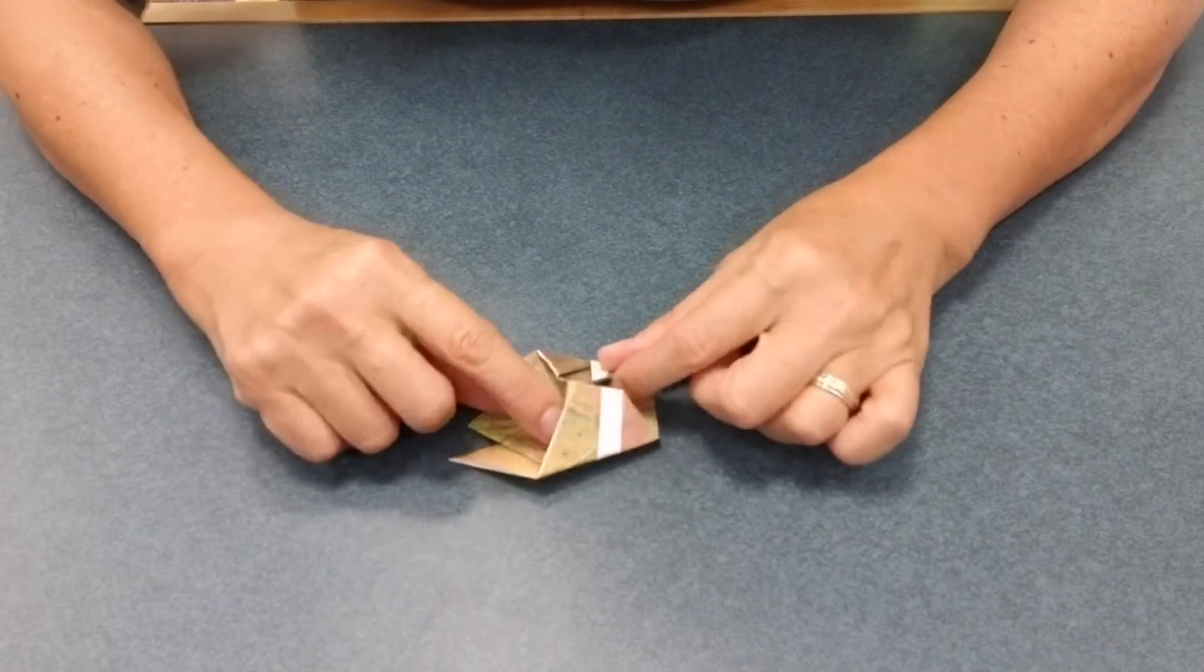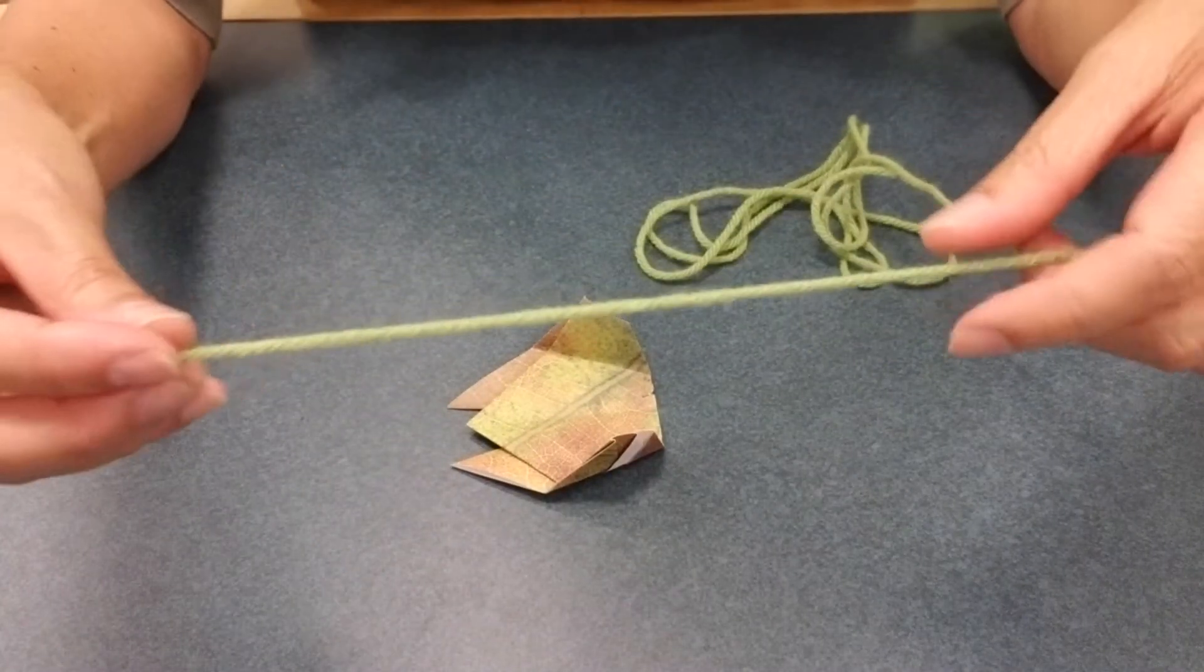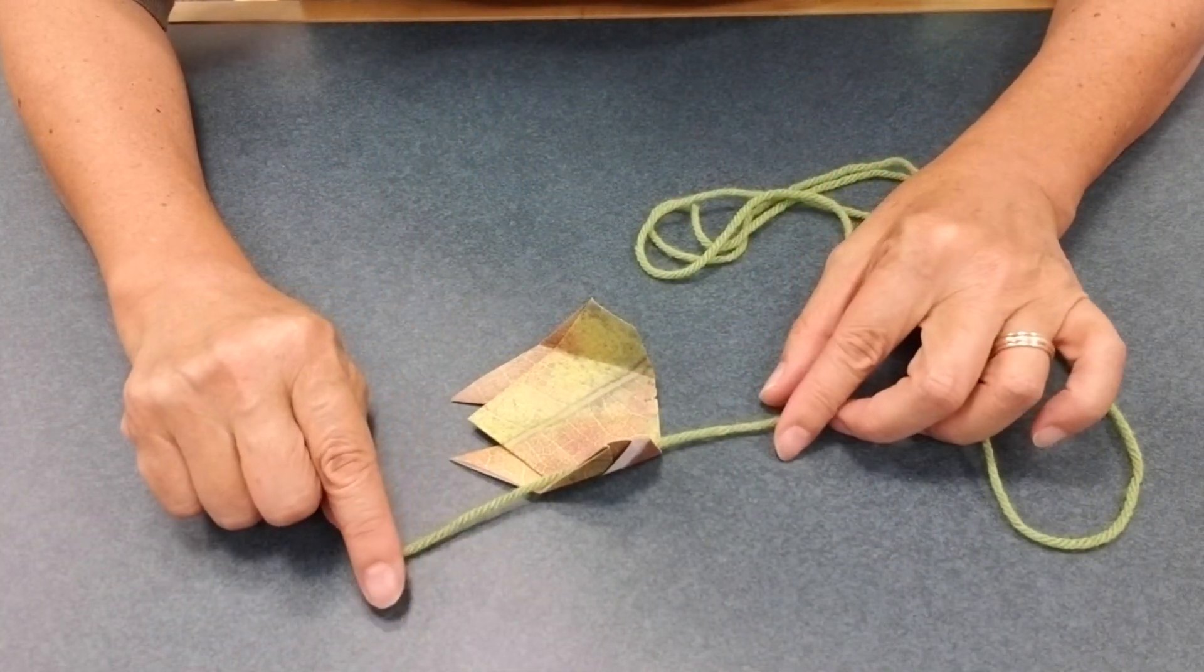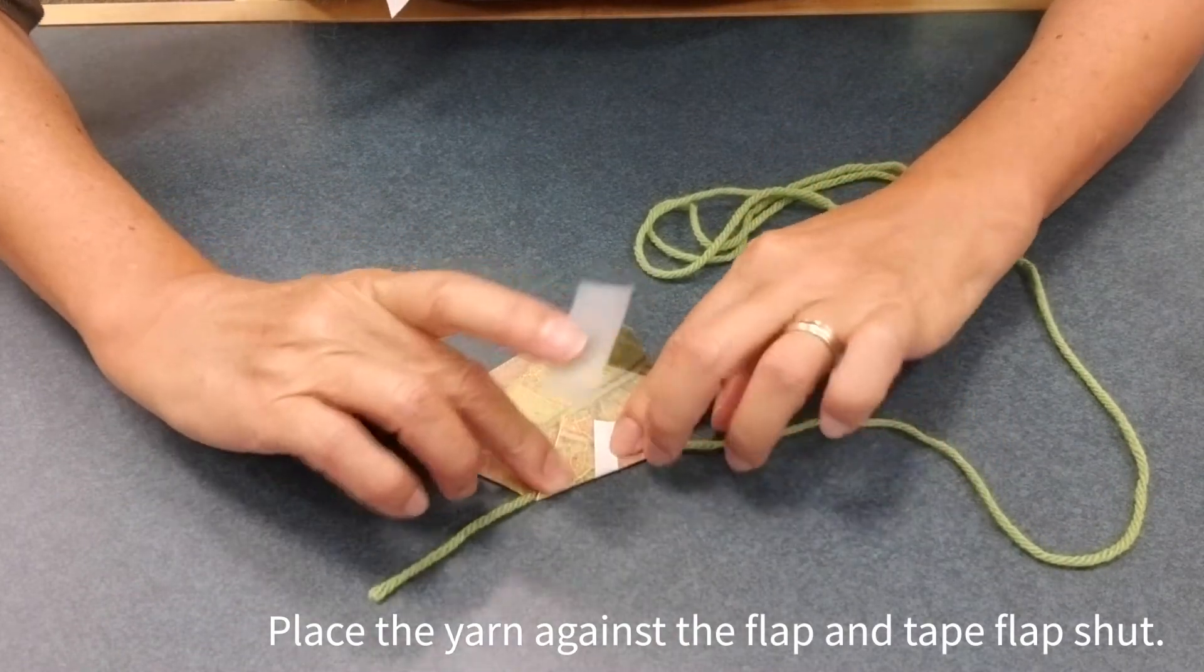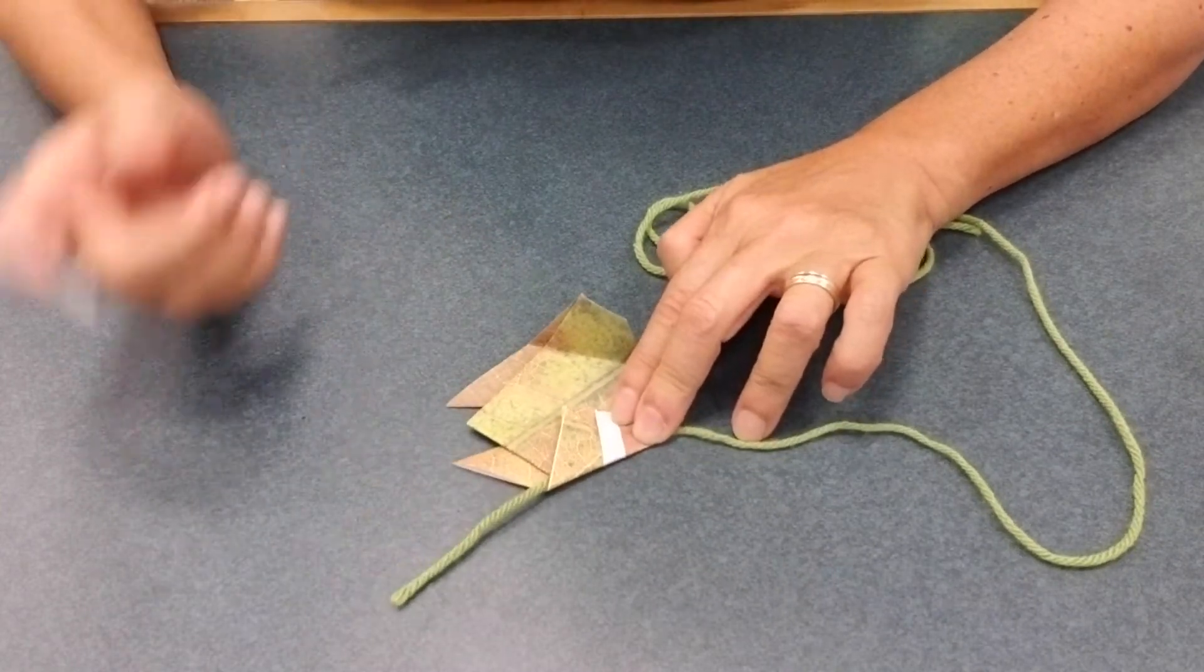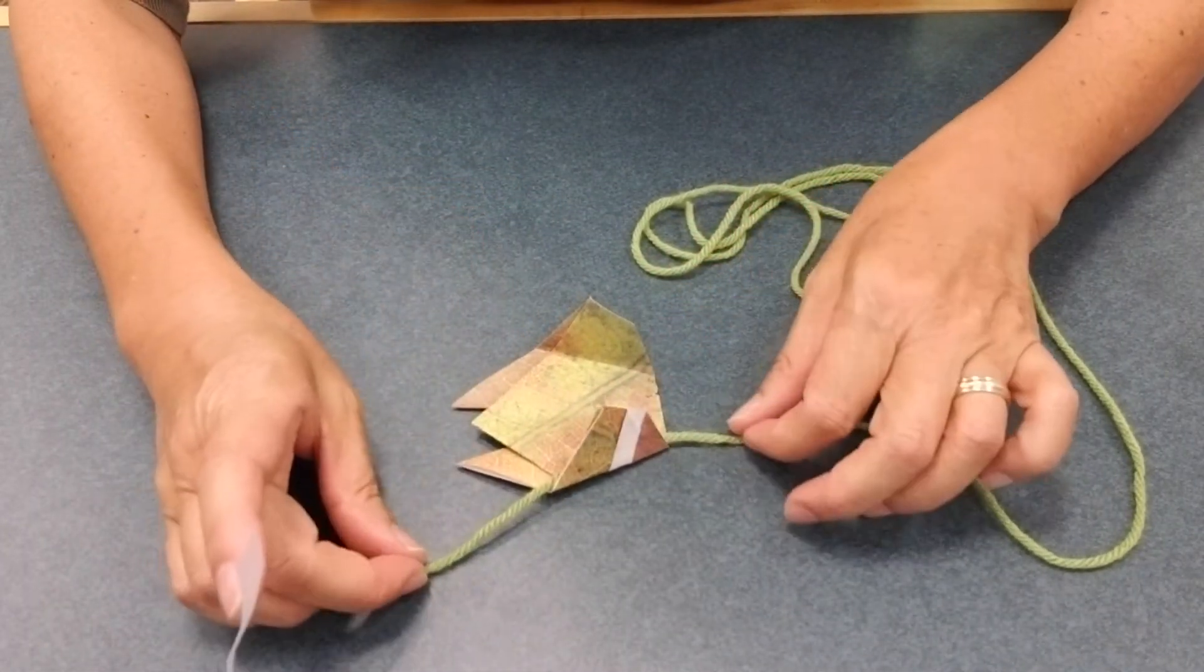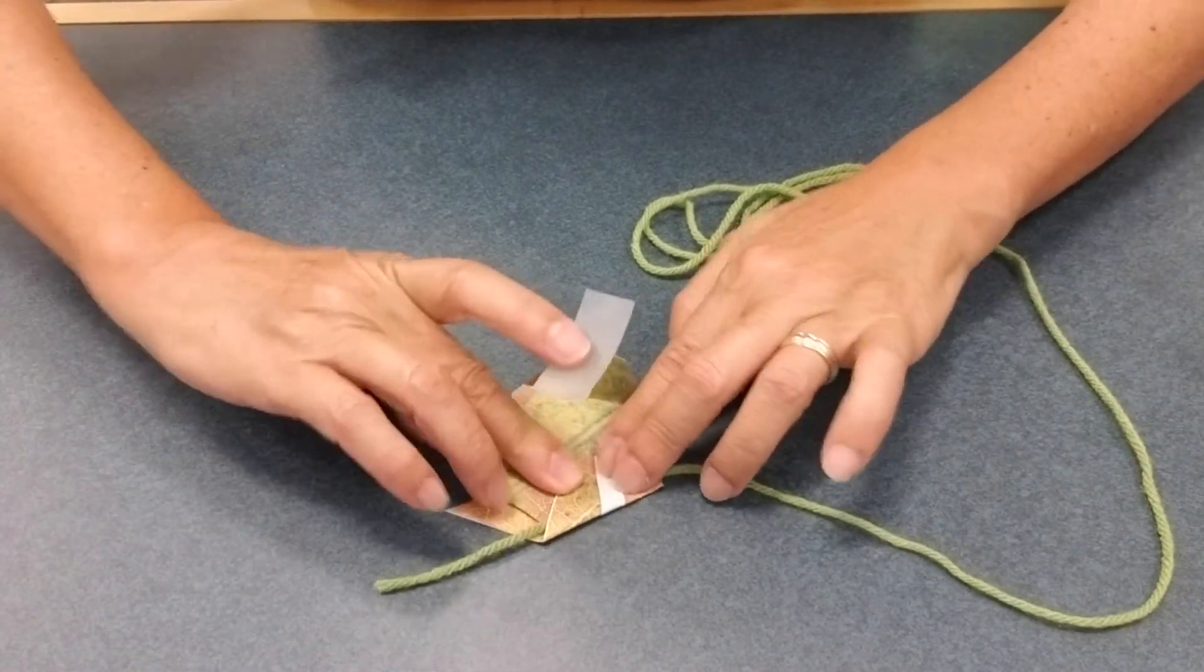Now we're going to do what we need to do so that he can move. So taking your string, put it under one flap. And then we're going to tape this flap over. If you don't have any tape, you can glue it. That's perfectly fine. You'll probably have to hold it down a little bit for it to set. But the main thing is that you don't want to get any glue on the string. Because the string has to be able to move up and down.